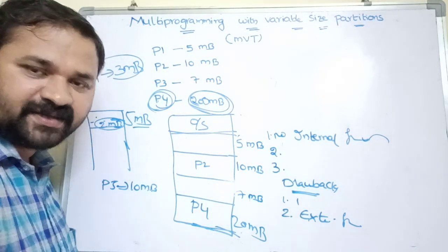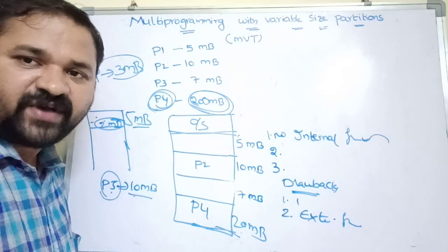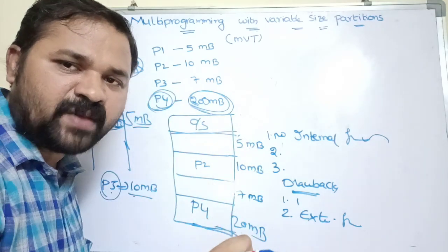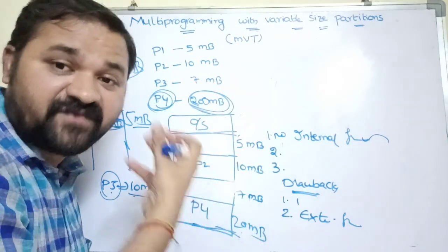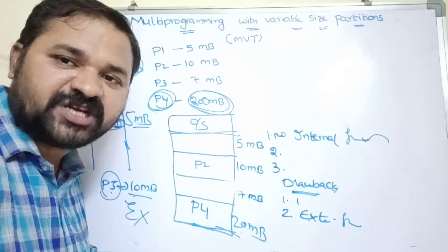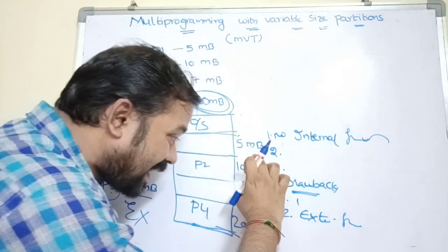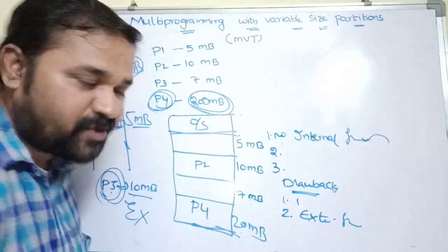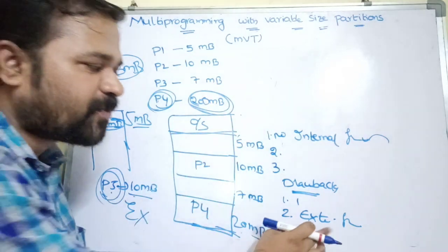P5 has a size of 10 MB. Is it possible to store P5 in main memory? It is not possible, because this is contiguous allocation — a single contiguous block of memory needs to be allocated for the process. A single 10 MB block is not available in main memory, even though free blocks of 5 MB and 7 MB exist at non-contiguous locations.